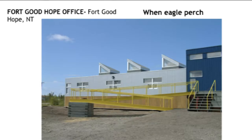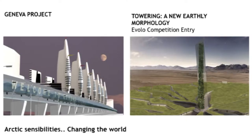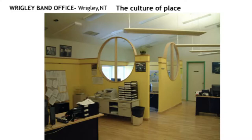One of my favourite buildings — the Fort Good Hope office. When eagles perch. That's what the elders said. They loved these little elements. We developed this back in 2000 and it looks like eagle perching. Being Arctic sensibility — these are projects we did internationally. The Geneva project and also a tower that replenishes the aquifer of the Sahara by using a vertical solar chimney, a vertical garden, and precipitating salt out to build a new environment. Culture in place — you may recognize this as the drum. It's the Wrigley band office, and these lights are patterned after the drum dance.